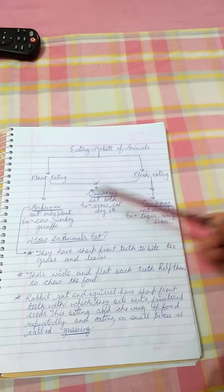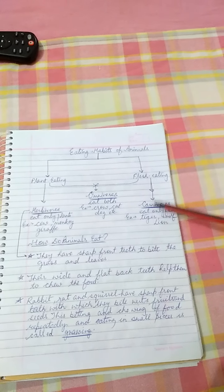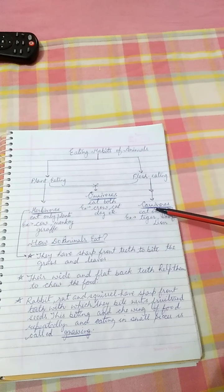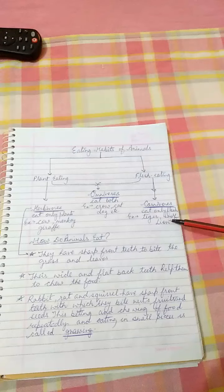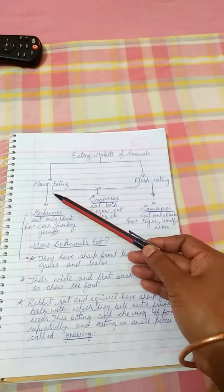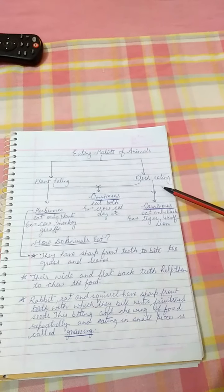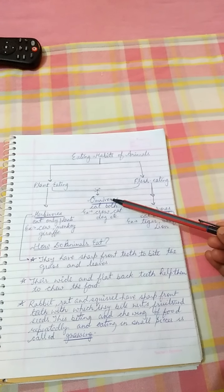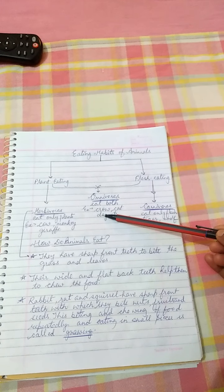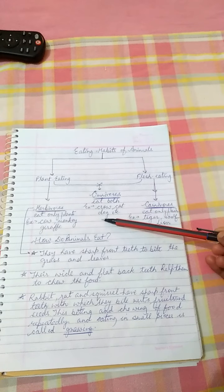The examples of herbivorous animals are cow, monkey, and giraffe. Whereas examples of flesh-eating animals or carnivorous animals are tiger, lion, wolf, etc. The animals which eat both plants and flesh are called omnivorous, and the examples of omnivorous animals are crow, cat, dog, etc.